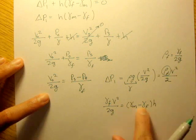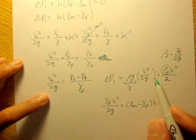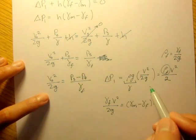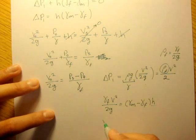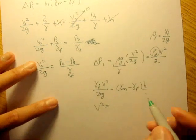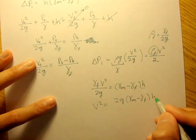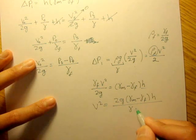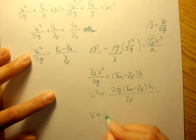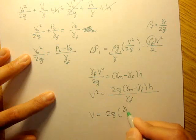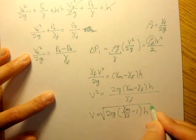The change in the two gammas times h equals our change in pressure, because change in pressure equals gamma times change in height. Solving for v²: v² = 2g(γ_mercury − γF)·h / γF. Taking the square root: v = √[2g·(γ_mercury/γF − 1)·h]. That is the velocity of the air at point zero.